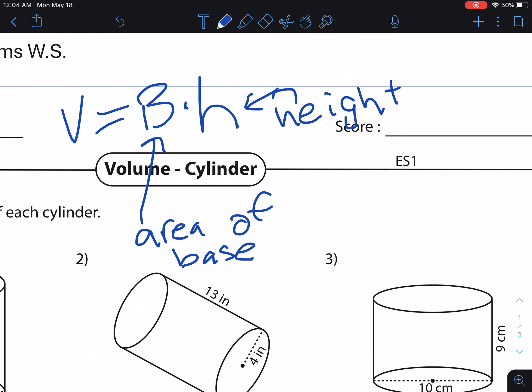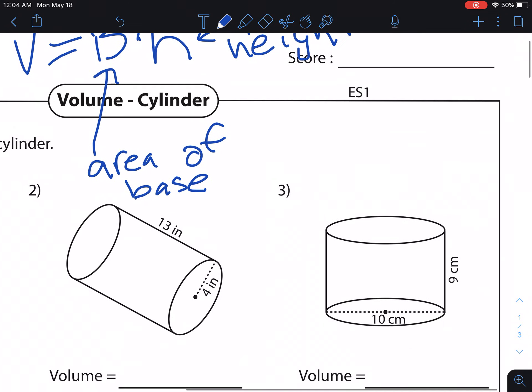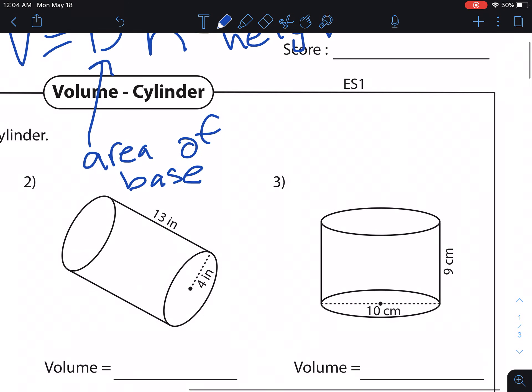So the H is for the height, but it could also just be the distance between the base shapes. For example, cylinder here has a base shape of a circle. So from here, that's one base shape, and then the other base shape is down there. So the height is 9. It's the distance between the two base shapes.